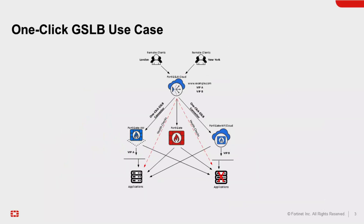Let's drill down to the one-click GSLB use case. In most enterprise businesses, most applications will be deployed in multiple locations. In this example, we also have remote clients from different locations. On the left side at the top, we have London clients as well as New York clients. In this case, we are fronted by a FortiGate CLB cloud, using example.com as an example.